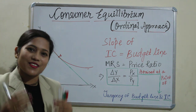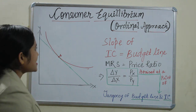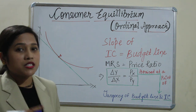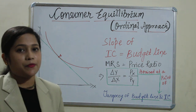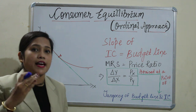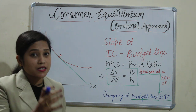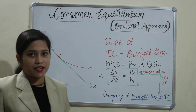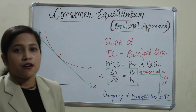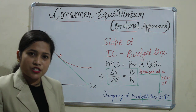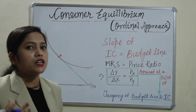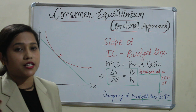Please do attend the exam so that you can test yourself what you have gained through my lecture. Consumer equilibrium is a point where the consumer can get maximum satisfaction from his minimum budget — from minimum budget, maximum satisfaction. That is what is called consumer equilibrium.